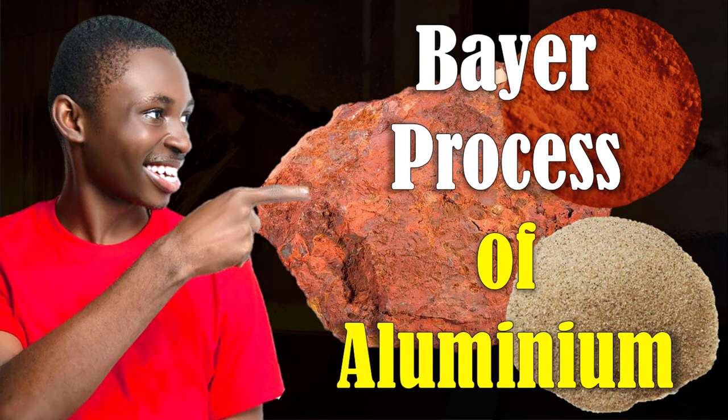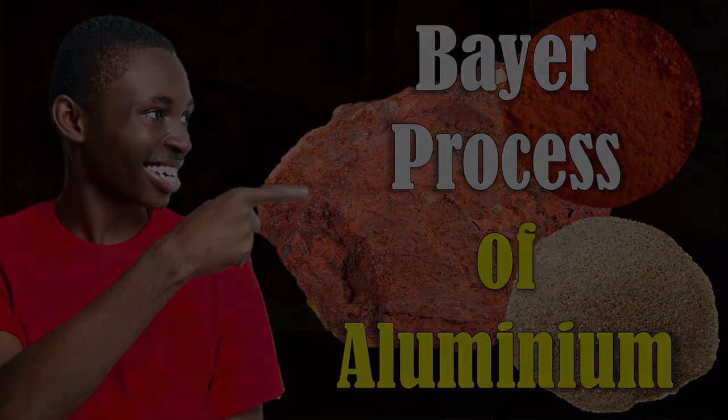Hi, it's the Science Chef again. In this video, you'll learn about the Bayer process, one of the two major processes involved in the extraction of aluminium from bauxite. So if you want to know the steps involved in obtaining pure alumina from bauxite, then endeavor to watch this video to the end.